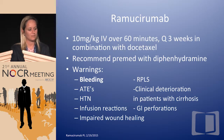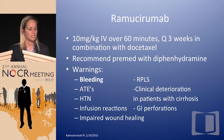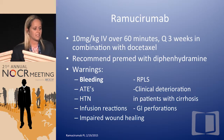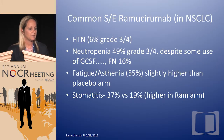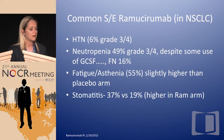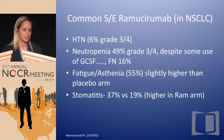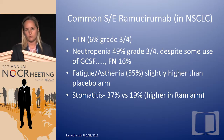Ramucirumab was recently approved in December for non-small cell lung cancer. It is given at 10 mg/kg IV over 60 minutes every three weeks in combination with docetaxel. It is recommended to premed with diphenhydramine, which we do not do for bevacizumab. The warnings are very similar to bevacizumab. Grade 3-4 hypertension is 6% versus 8% with bevacizumab — pretty similar. Stomatitis is one toxicity that is increased, and I do think there is some contribution from the ramucirumab.